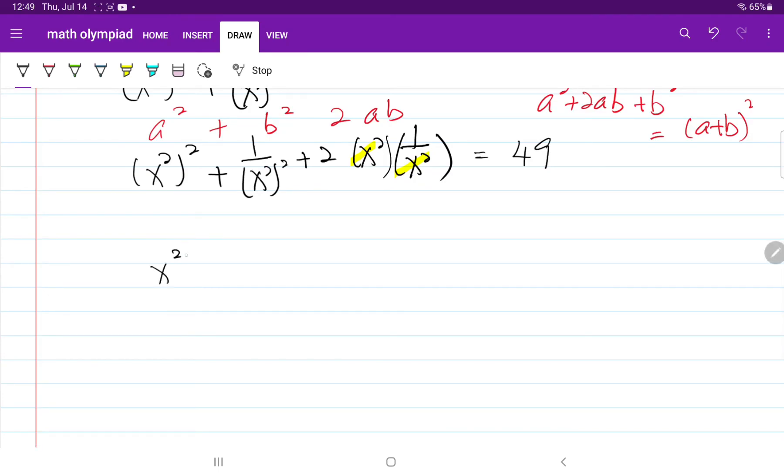So now we have x squared plus 1 over x squared, the whole thing squared, equals 49.